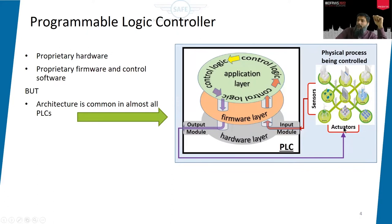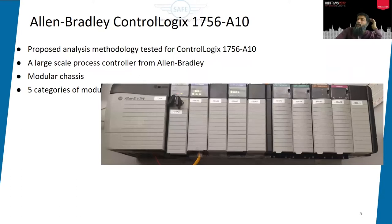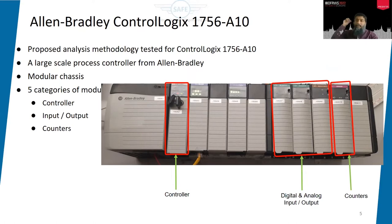In our case we have ControlLogix 1756. It's a modular chassis with a controller — the brain of the chassis — and different varieties of digital and analog input/output modules, dedicated counters because timing is very important in PLCs, communication modules like Ethernet, and the power supply unit.